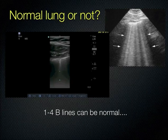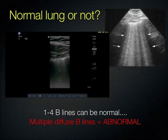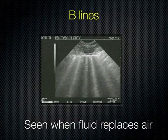Recall the histology picture with the thickened interlobular septi and fluid in the alveoli. That fluid next to the air in the lung creates a reverberation, but in this case the reverberation is vertical. Here's an in-motion picture of what B-lines look like — the fluid replacing the air looks like a light show. There are multiple B-lines going all the way to the edge of the screen, and the A-lines have disappeared.